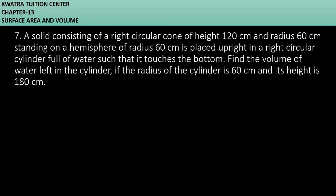Let's start with question number 7. It says: a solid consisting of a right circular cone of height 120 cm, radius 60 cm, standing on a hemisphere of radius 60 cm, is placed upright in a right circular cylinder full of water such that it touches the bottom. Find the volume of water left in the cylinder if the radius of the cylinder is 60 cm and its height is 180 cm.